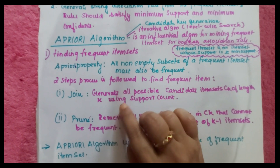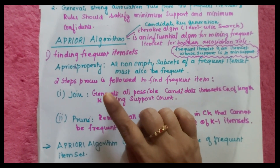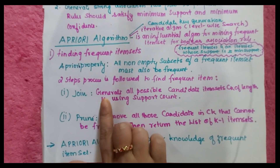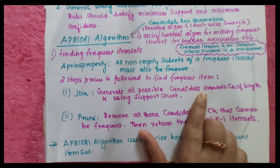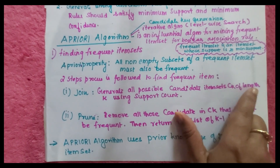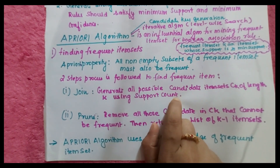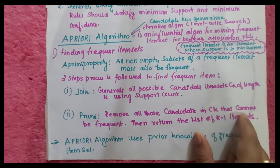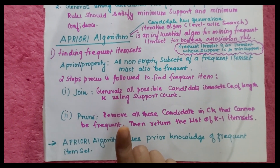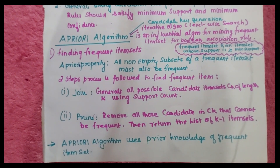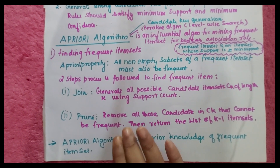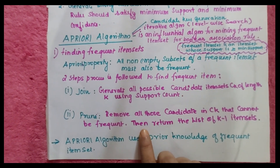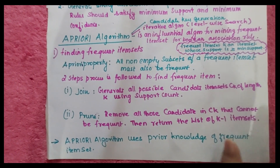There are two steps followed in finding the frequent item sets. First is join: generate all possible candidate item sets CK of length K using support count. Second is prune: remove all candidates in CK that cannot be frequent — that is, those that cannot satisfy the minimum support value. Such candidates are removed, and then return the list of K minus 1 item sets.